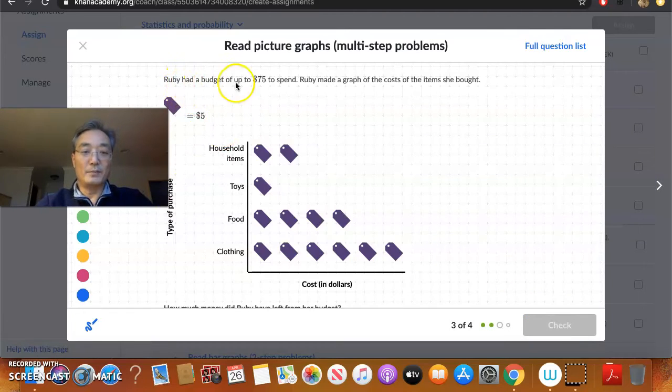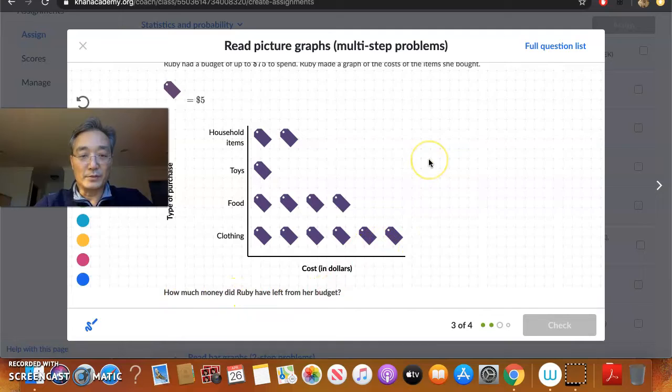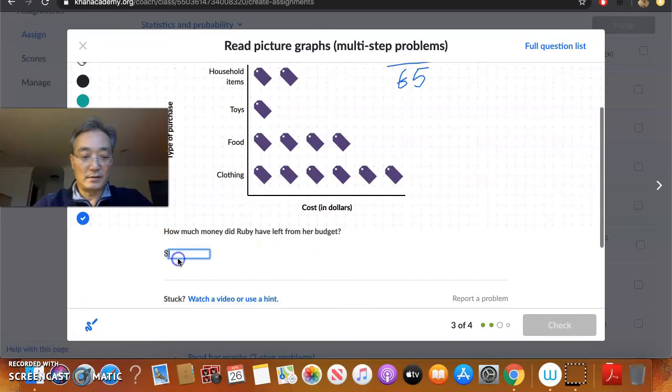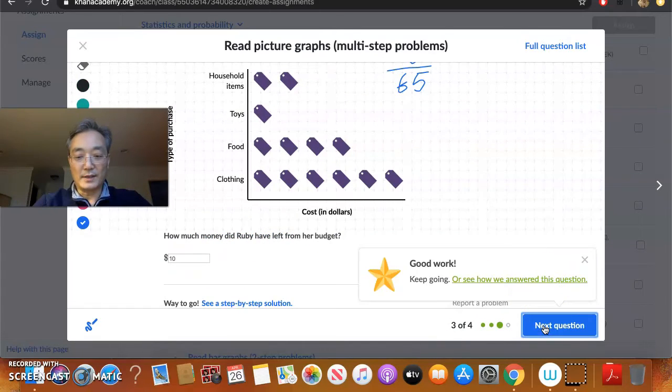Here we have Ruby had a budget of up to seventy-five dollars to spend. Ruby made a graph of the cost of the items she bought, and each tag represents five dollars. So these are the types of purchases that Ruby made. How much money did Ruby have left from her budget? So she had up to seventy-five dollars in her budget to spend. And that's how much she spent: one, two, three, four, five, six, seven, eight, nine, ten, eleven, twelve, thirteen. So thirteen times five is sixty-five. So it looks like she has ten dollars left.